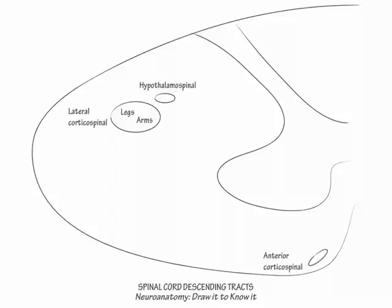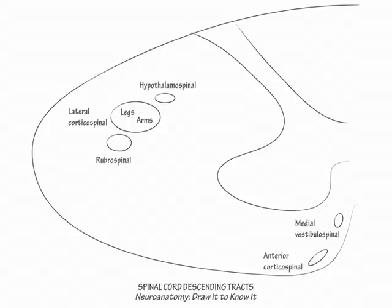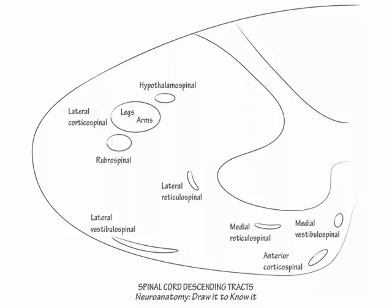Now label the rubrospinal tract in front of the lateral corticospinal tract, then label the medial and lateral vestibulospinal tracts medially and laterally to the anterior horn. And finally, label the medial and lateral reticulospinal tracts also medial and lateral to the anterior horn.